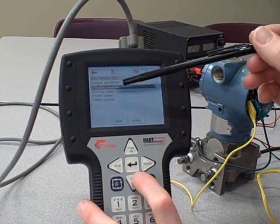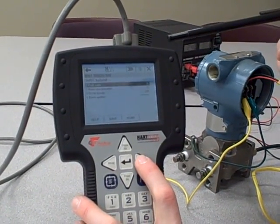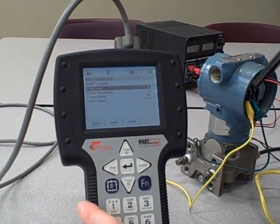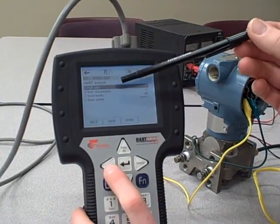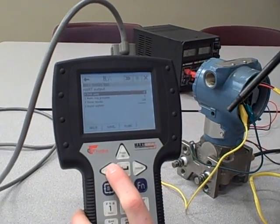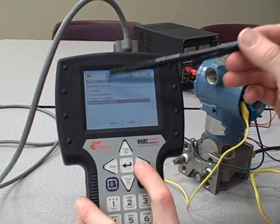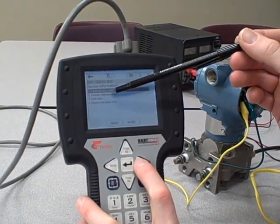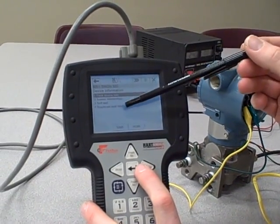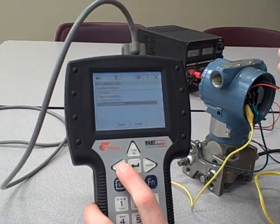We can also go into Output Condition and configure some things regarding the Analog Output. The HART Output, for example, what variables are output by the HART Protocol. The Burst Mode, for example, Poll Address in case it was a multi-drop transmitter. All kinds of things here. And then under Detailed Setup, we also have Device Information. We can program information about self-testing, whether or not it has diaphragm seals, information about the sensor and the materials it's made out of, things like that.